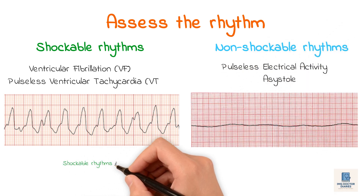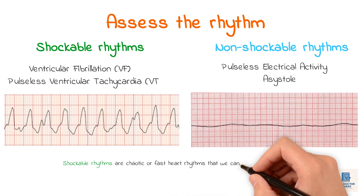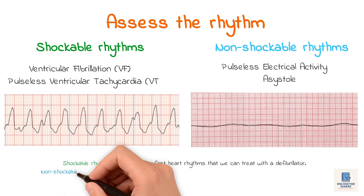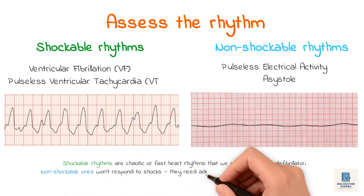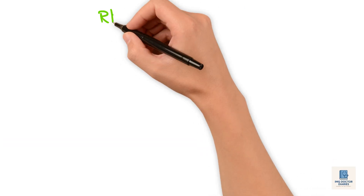Shockable rhythms are chaotic or fast heart rhythms that we can treat with a defibrillator. Non-shockable ones won't respond to shocks — they need adrenaline and continuous chest compressions.